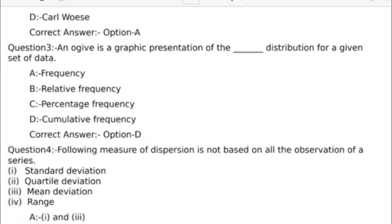Third question: An ogive is a graphic presentation of the distribution for a given set of data. Answer options: Option A, Frequency; Option B, Relative Frequency; Option C, Percentage Frequency; Option D, Cumulative Frequency. Correct answer: Option D, Cumulative Frequency.